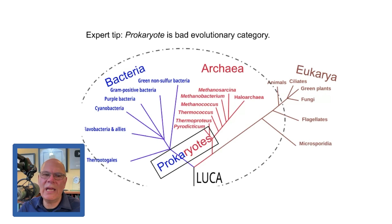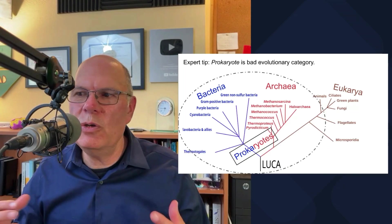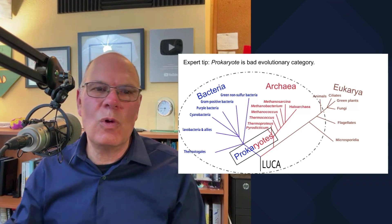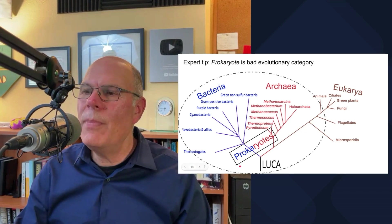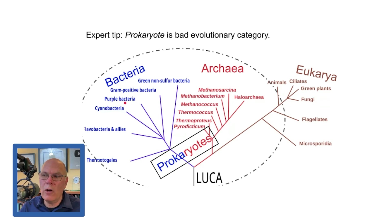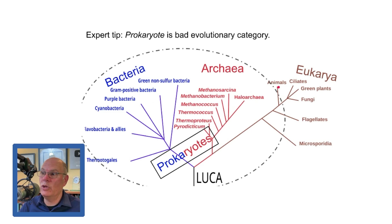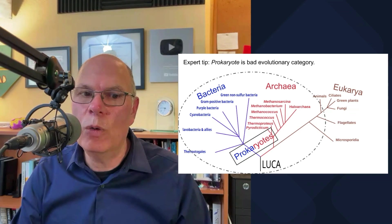Prokaryote is actually a bad evolutionary category — prokaryotes aren't a unified group. They don't derive from a common ancestor the way vertebrates or mammals do. Bacteria are one kind of prokaryote, and on a molecular level they're quite different from the other prokaryotic group, archaea. That molecular level involves looking at things like the sequence of RNA bases that make up ribosomes. Bacteria are no more closely related to archaea than to eukaryotes — in fact, eukaryotes came about as a fusion of bacteria and archaea. We'll talk about that later.